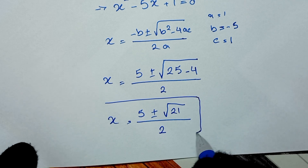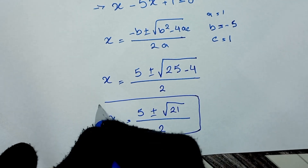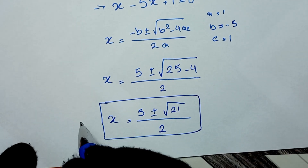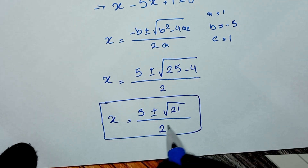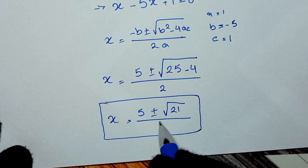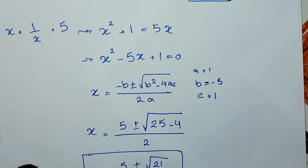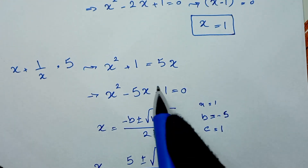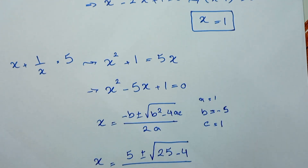So we have three answers for x: x equals 5 plus the square root of 21 over 2, x equals 5 minus the square root of 21 over 2, and x equals 1. This is our final answer.